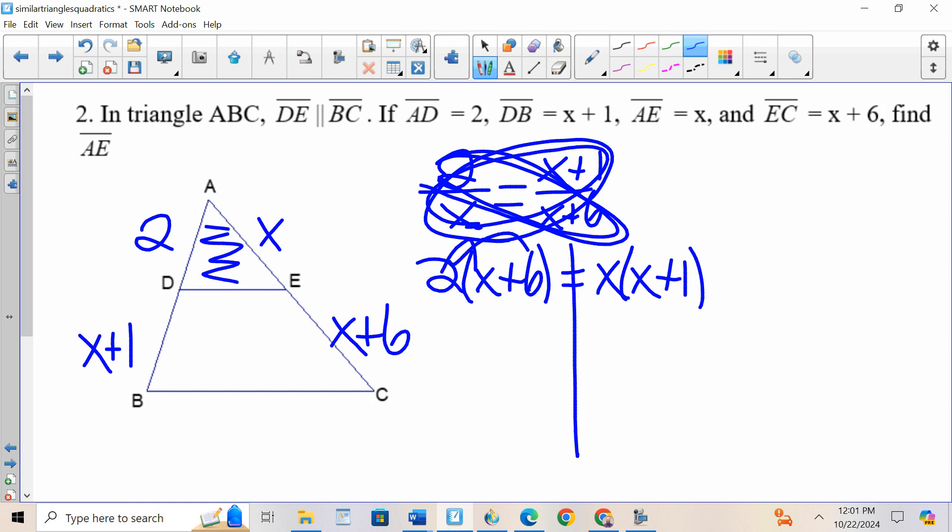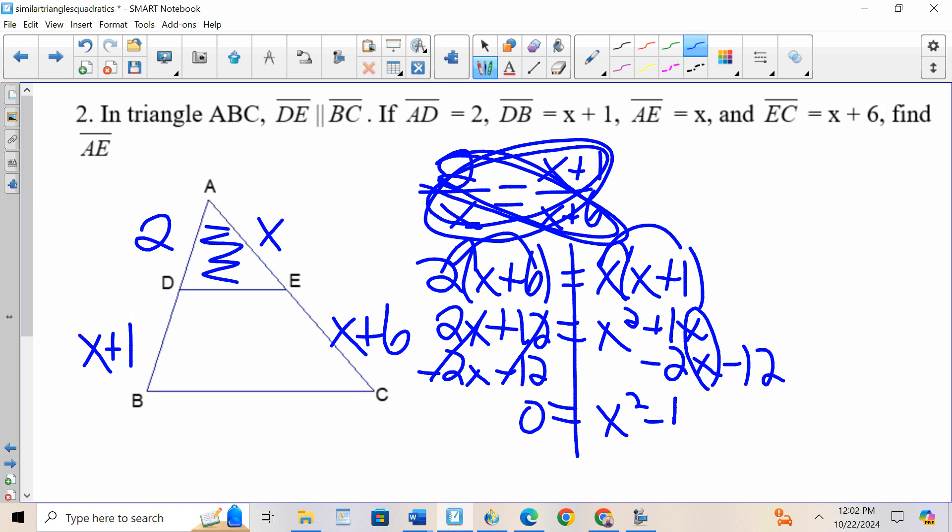I distribute, from here it's all algebra. X squared plus 1X. Mr. X squared, he wants to party, before he can party, all of his friends have to come over. Minus 2X minus 12, minus 2X minus 12. Notice I lined up the X's, I lined up the like terms. 0 equals X squared minus 1X minus 12.